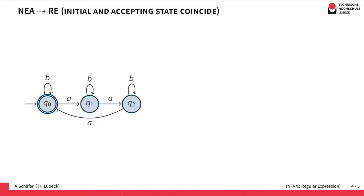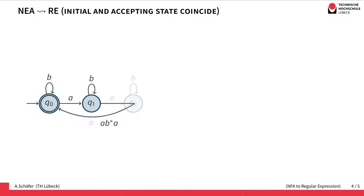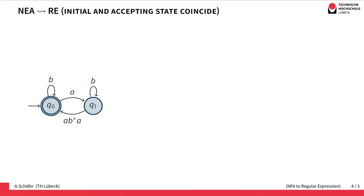However, we can also have the case in which the initial state and the accepting state coincide. It's quite a similar language — the only difference is that q0 is both initial and accepting. We can see that we switch state using each 'a', so if we count a's modulo three, the number of b's doesn't matter. For the algorithm, we do state elimination again. The first state we eliminate is q2 — we remove it and add a new transition from q1 to q0 annotated with ab*a, giving us this automaton.